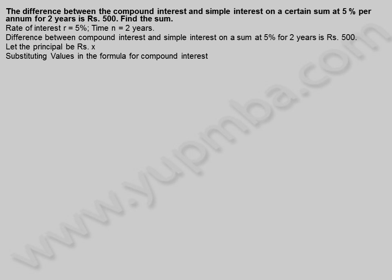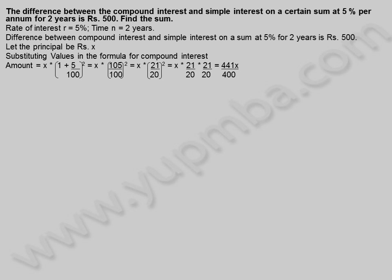Substituting values in the formula for compound interest. Amount is equal to X into (1 + 5/100) whole square, equals X into (105/100) whole square, equals X into (21/20) whole square, equals X into 21/20 into 21/20, which equals 441X by 400.